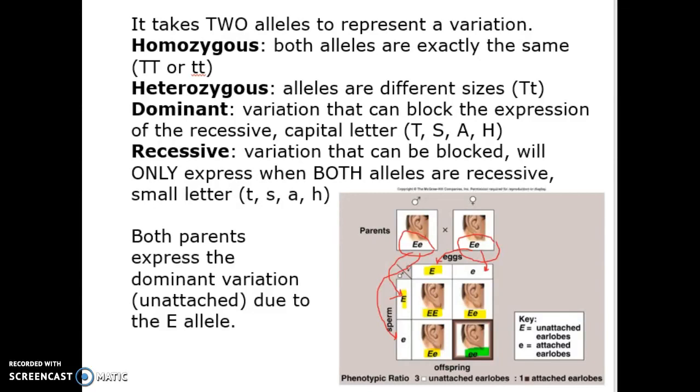And then one out of the four possible outcomes could actually give us a recessive individual. It's possible, 25% chance, that those two parents, two heterozygous parents, will produce a child with attached earlobes. Two dark-haired parents have a blonde-haired baby. How'd that happen? They both carry recessive alleles, and it's a 25% chance.